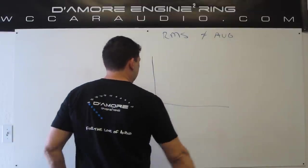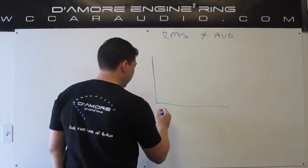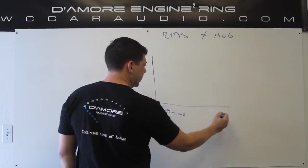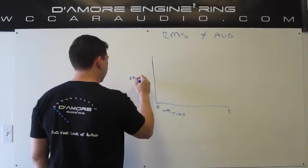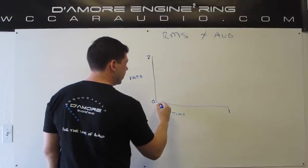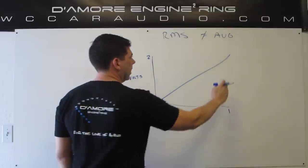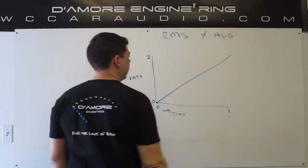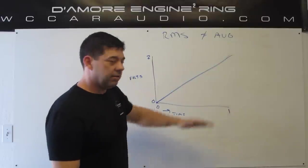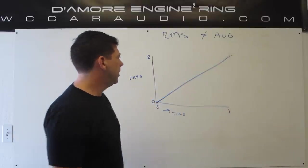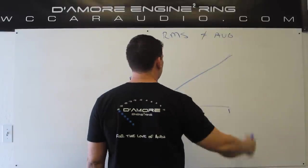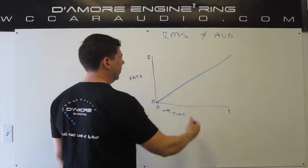Let me give an easy example. Let's say we have a signal here — this is a time course just like an oscilloscope — from 0 seconds to 1 second, and from 0 volts to 2 volts. Our signal just looks like a straight line going from 0 to 2. So the average of this line is 1 — 0 here, 1 here, 2 there. The average is 1. This is the middle of this thing.